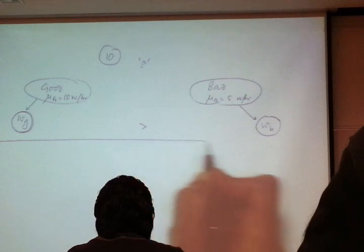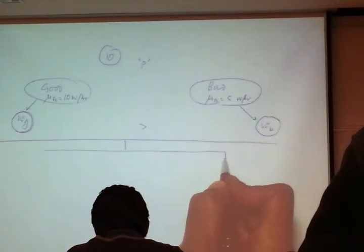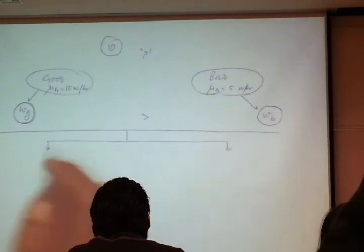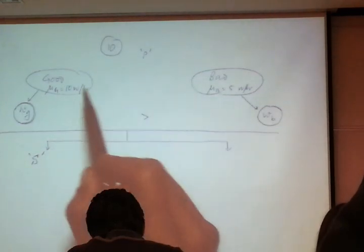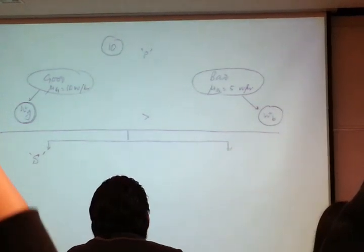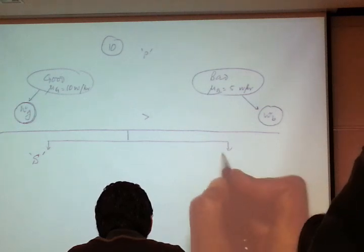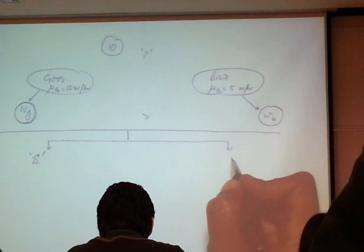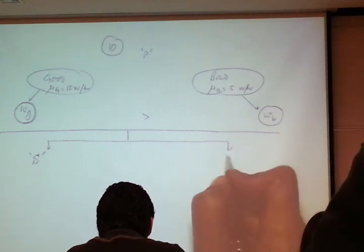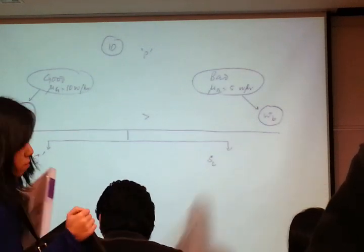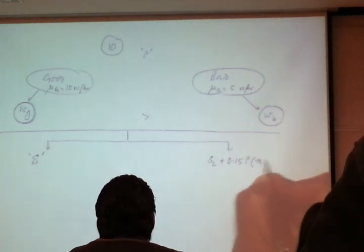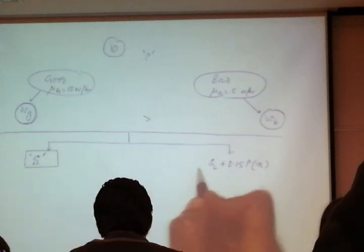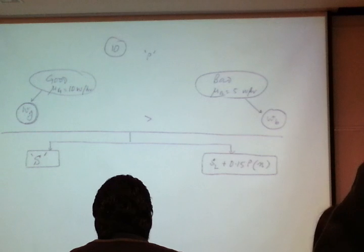The employer is determining between two kinds of wage schemes. The first scheme consists of paying all workers a fixed wage of S. Because the employer cannot distinguish between good and bad workers, the wage must be the same for both. The alternative is a piece rate scheme: a smaller fixed salary SL plus a variable component — 15% of the profit margin per widget produced by the worker.